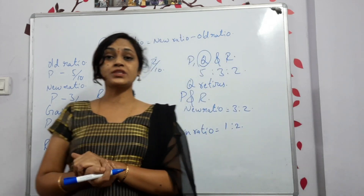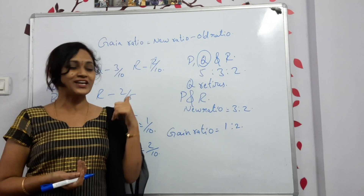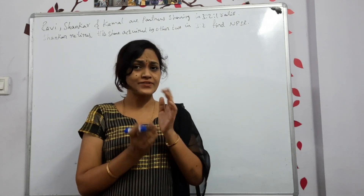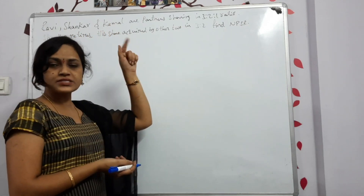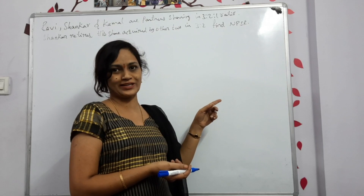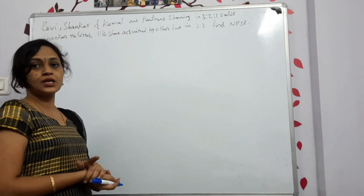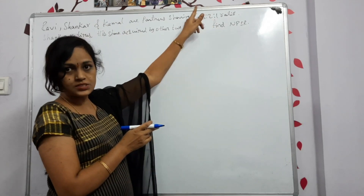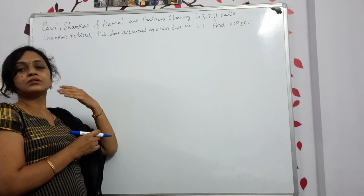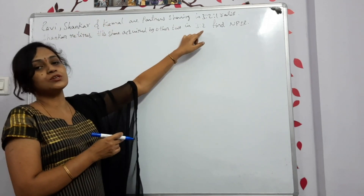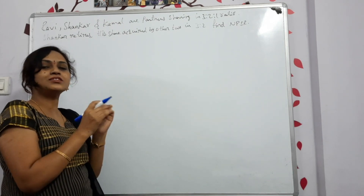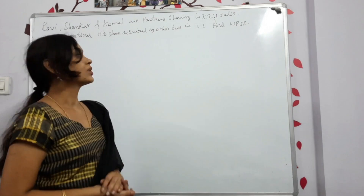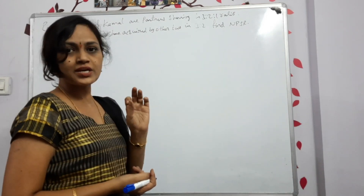Take a screenshot and we'll move on. Here is one more question - we are calculating the new profit sharing ratio. The question: Ravi, Shankar, and Kamal are three partners sharing profits in the ratio of 3:2:1. Shankar retired, and his share (which is 2) is divided between Ravi and Kamal in the ratio of 3:2. Find the new profit sharing ratio.